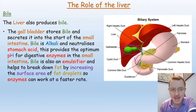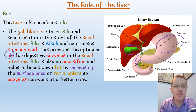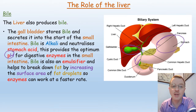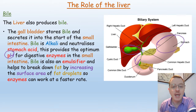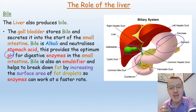Bile is an alkali, so it will neutralize any stomach acid that leaves the stomach, and it will provide an optimum pH for digestive enzymes in the small intestine — a pH that's around neutral or slightly alkaline. Bile is also an emulsifier and will help to break down fat droplets by increasing their surface area so that enzymes can work at a faster rate.